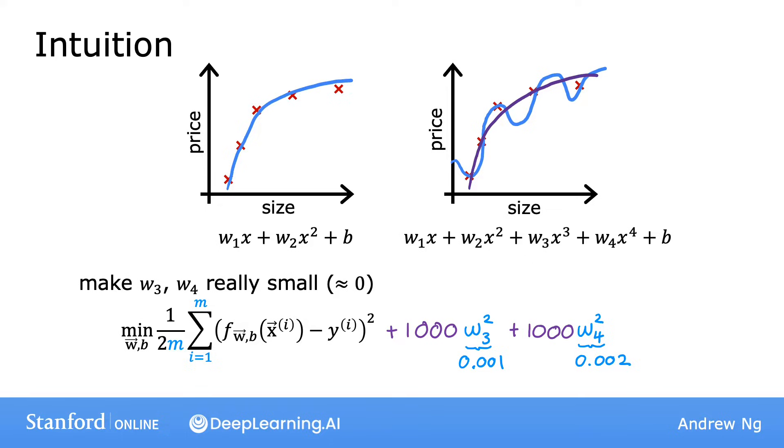Because otherwise, this 1000 times w3 squared and 1000 times w4 squared terms are going to be really, really big. So when you minimize this function, you're going to end up with w3 close to 0 and w4 close to 0. So we're effectively nearly canceling out the effect of the features x cubed and x to the power of 4 and getting rid of these two terms over here.